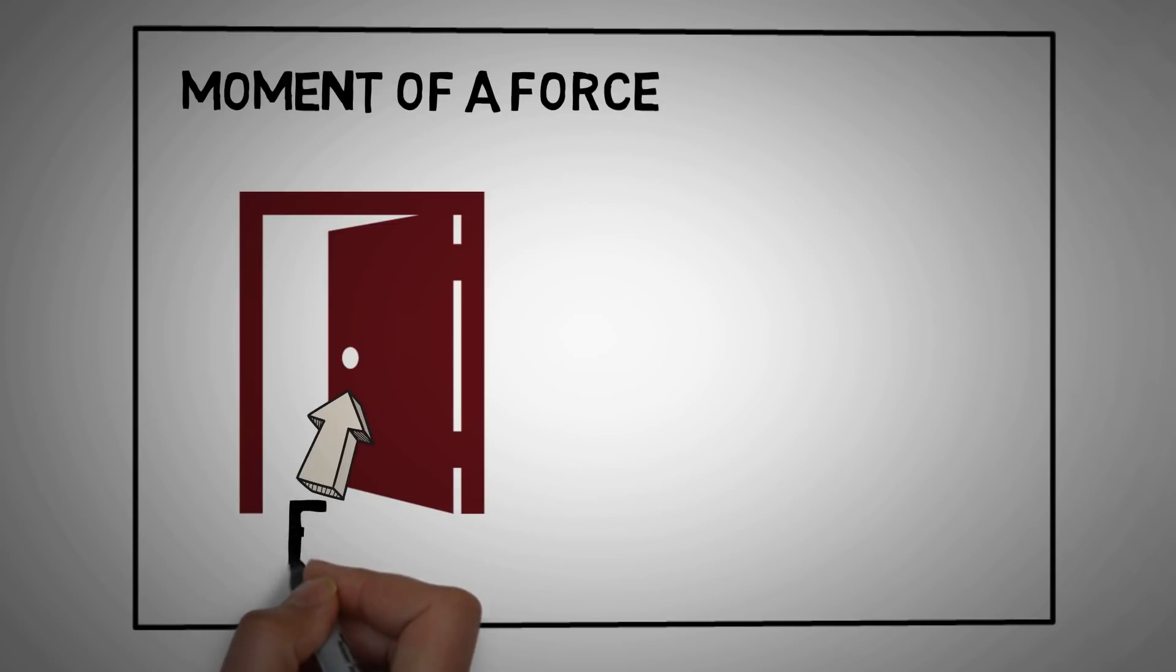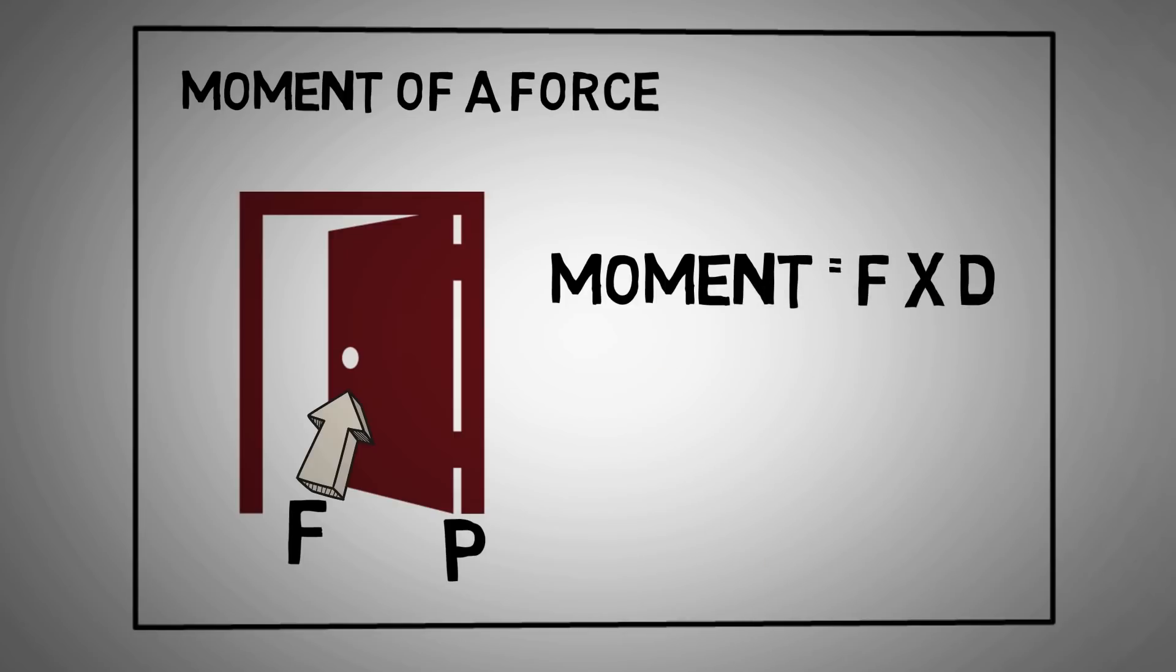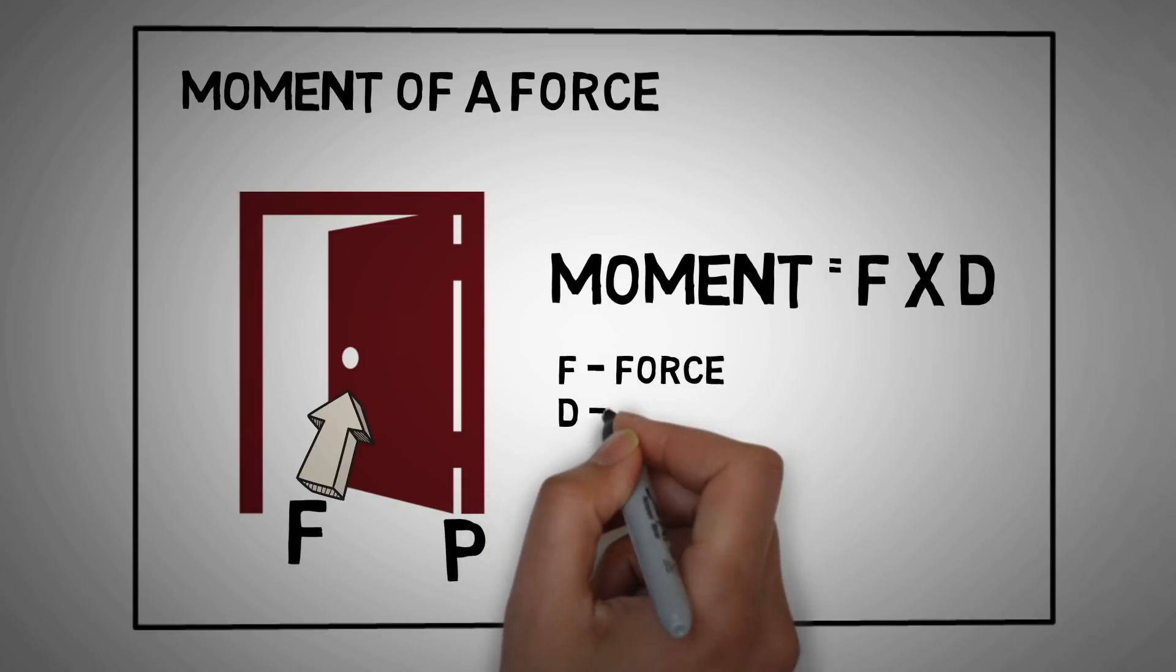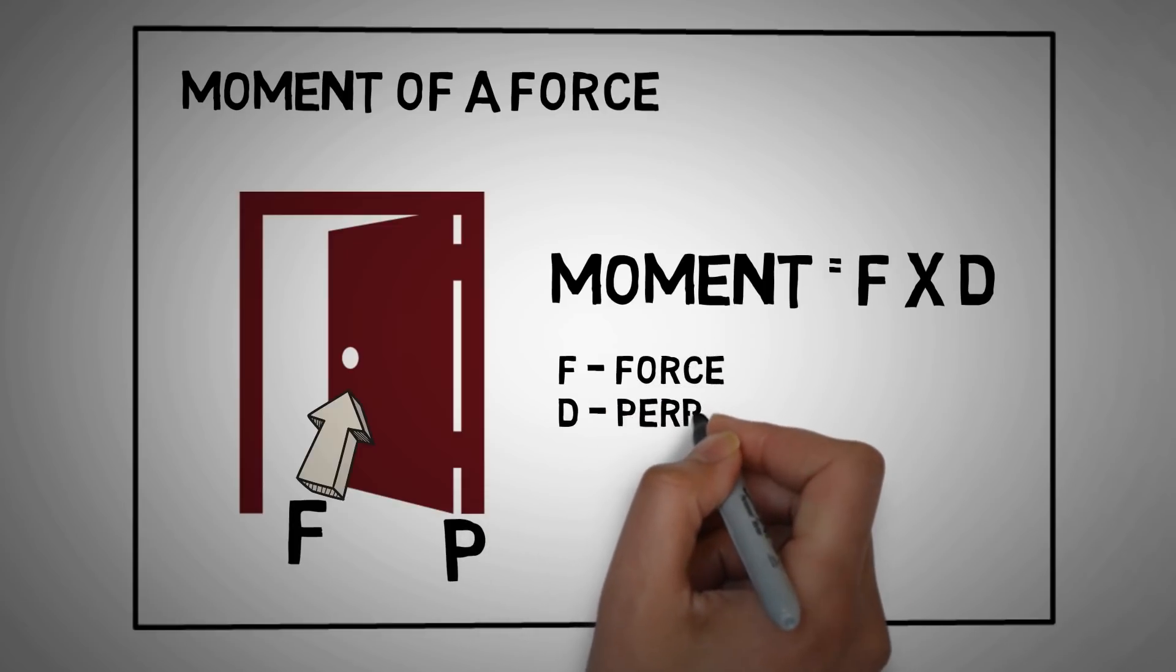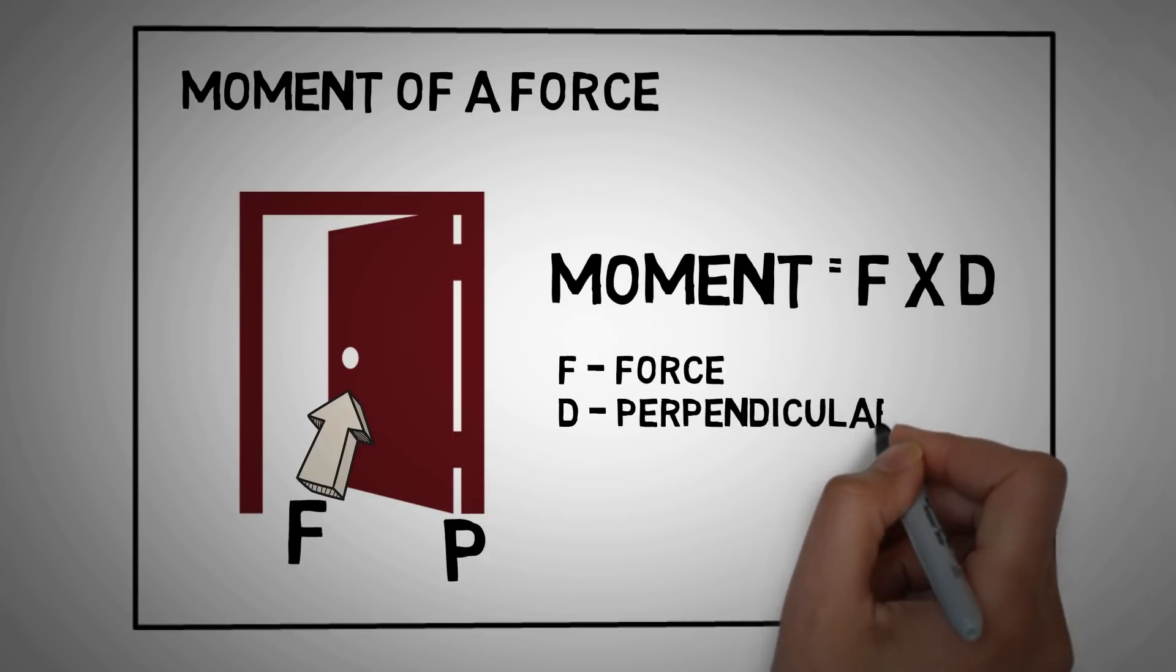Moment of force F about point P is equal to F into D, where F is the magnitude of the force, say 4 newtons, and D is the perpendicular distance between F and P.